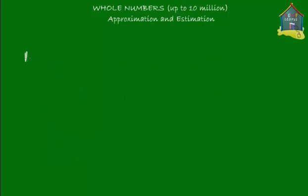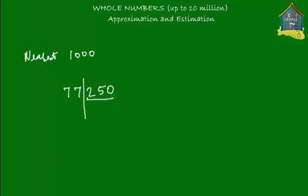Let's start with rounding off to the nearest thousand. Take the number 77,250. When rounding off to the nearest thousand, you only care about the part of the number up to the thousands place, which is 77,000. The remaining part — the 250 — you don't care about. It could be zero, 300, 500, or 800; it doesn't matter. You are only interested in the number up to the thousands place.